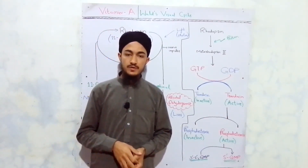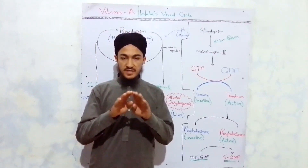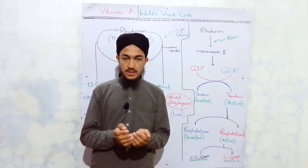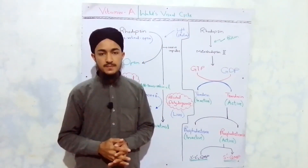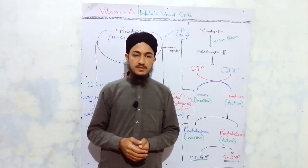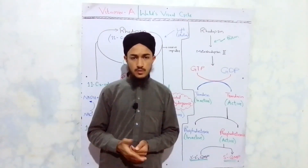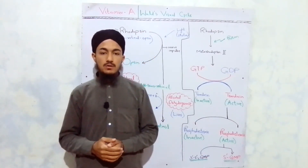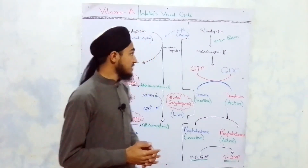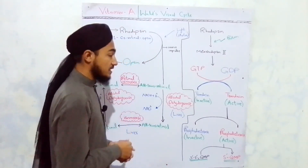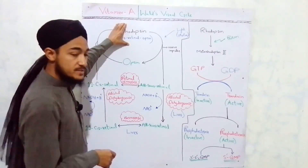The retina of our eye possesses two types of cells: rods and cones. The rods are located in the periphery of the retina, while the cones are located at the central part. The human eye possesses around 10 million rods and 5 million cones. Rods help in dim light vision, while cones help in bright light or color vision. Animals such as cats, dogs, and owls possess mostly rods, which is why they have better dim light vision.